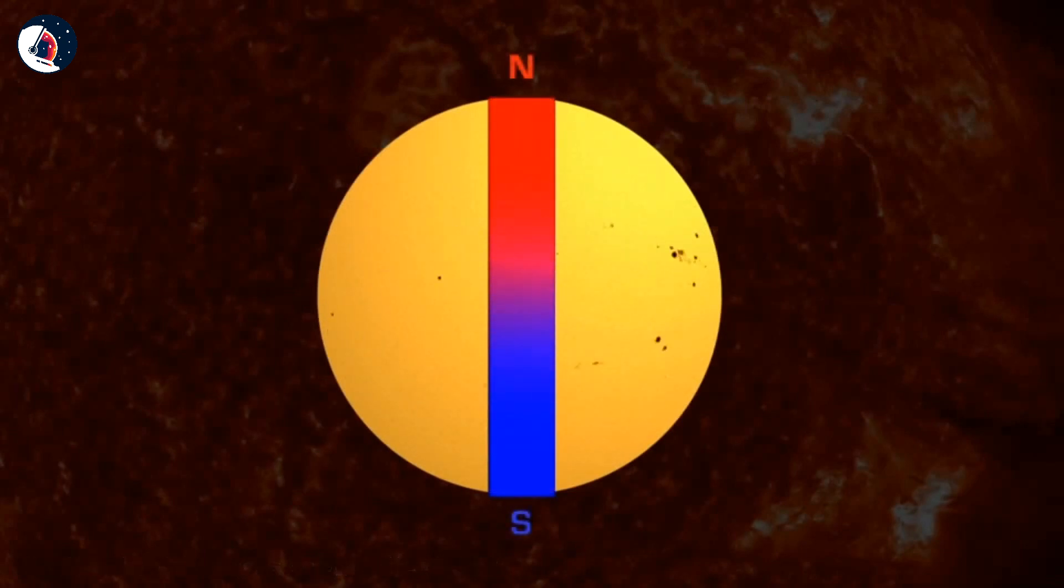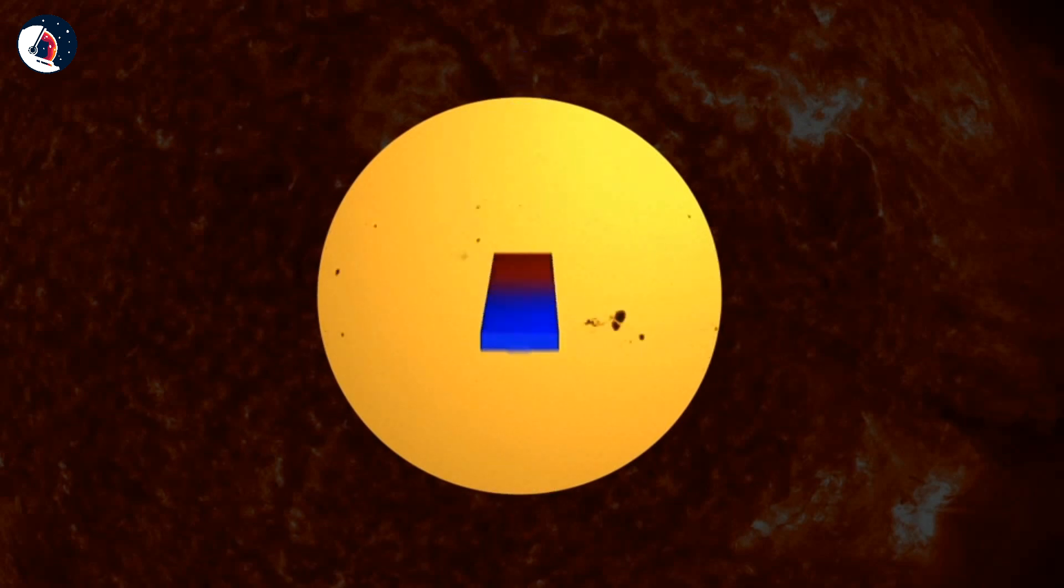Every 11 years, the sun's poles flip. North becomes south, and south becomes north. So every 22 years, the poles return to the position where they started the cycle.